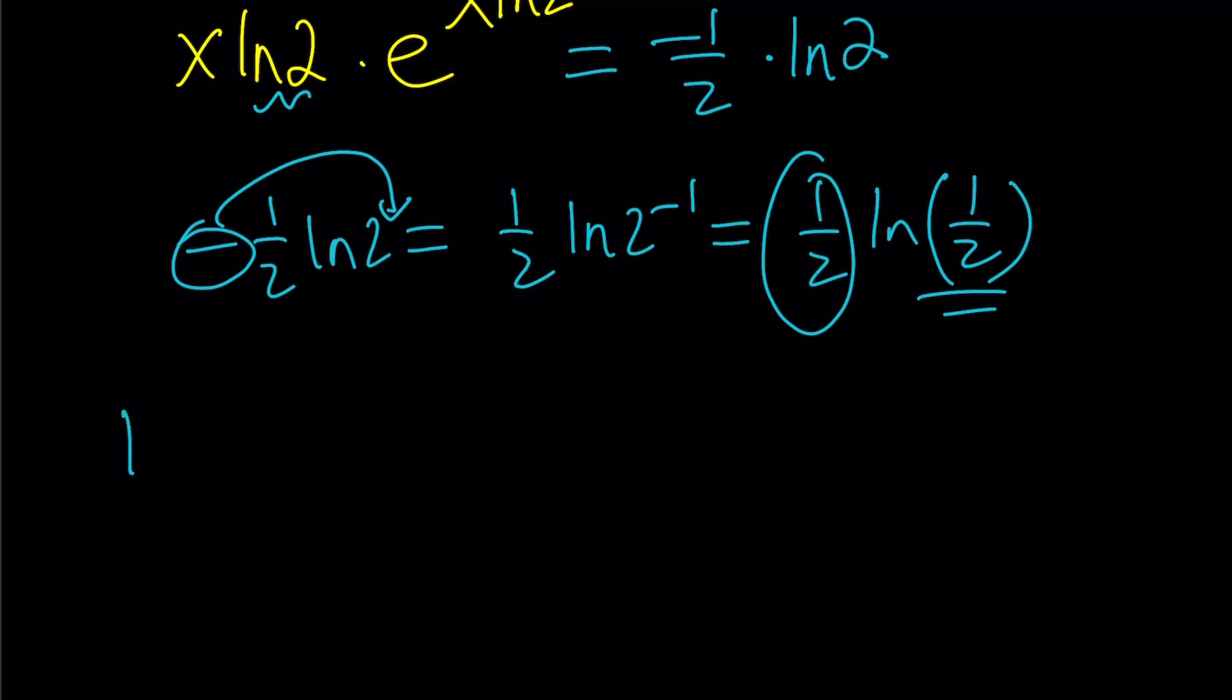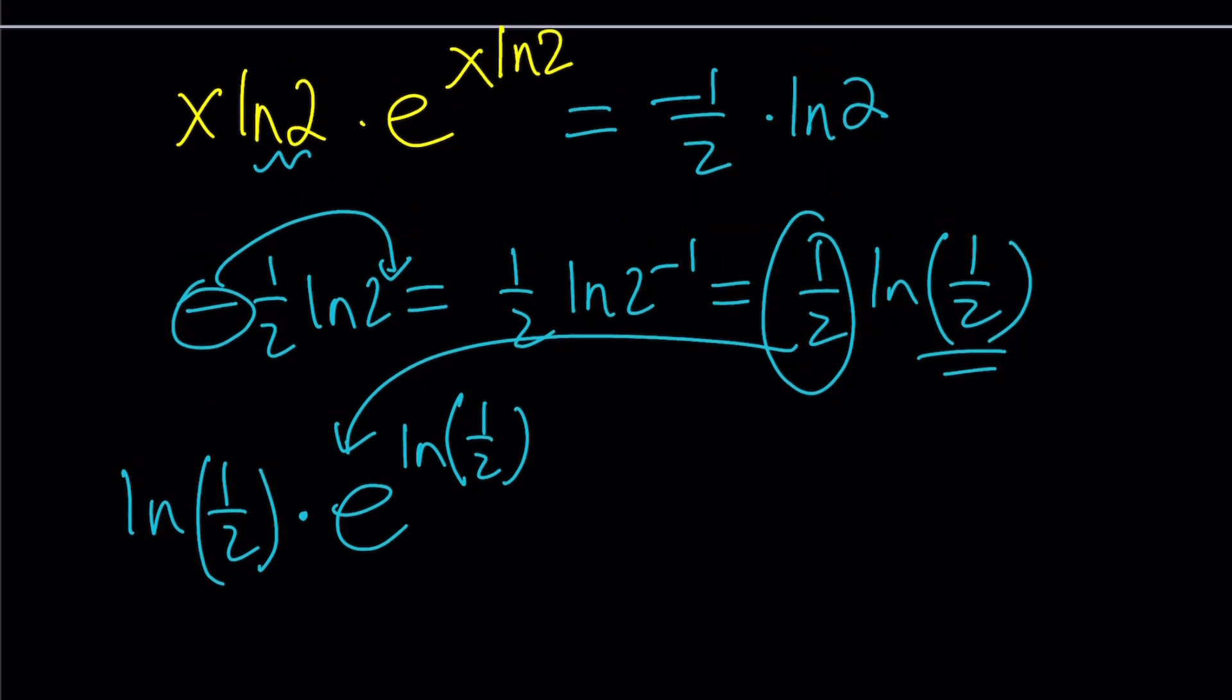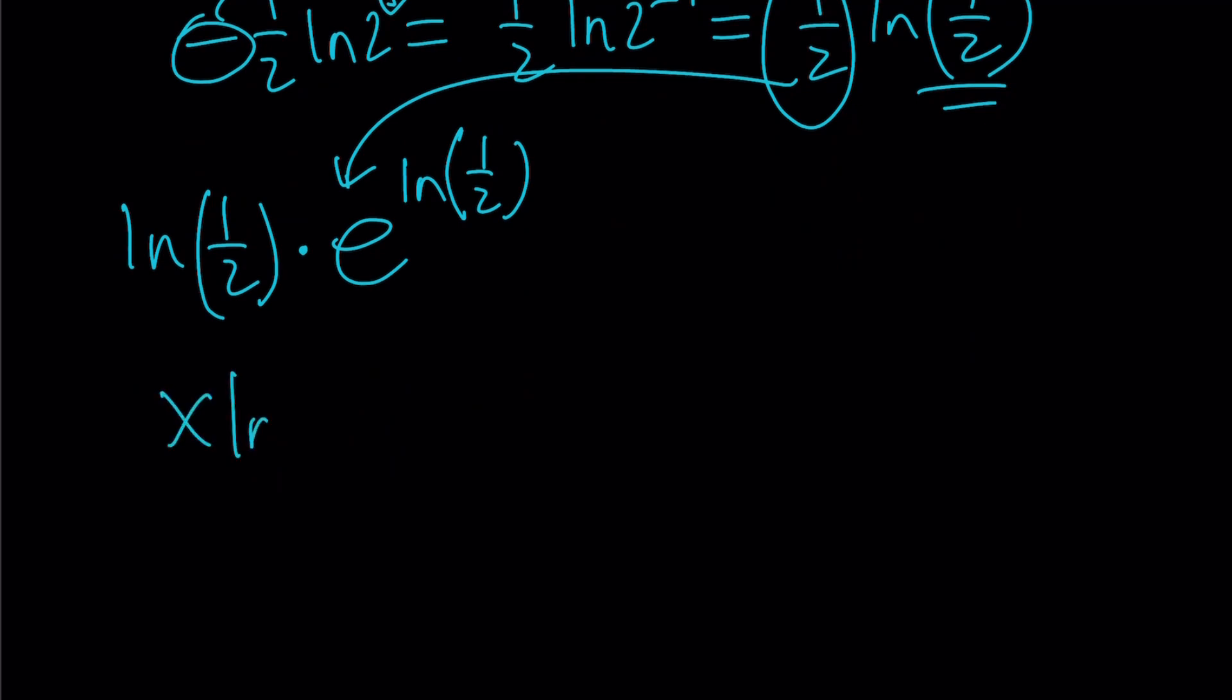I'm going to write this first. ln 1 half times, and 1 half will be replaced with e to the power ln 1 half, and notice that our t to the t appears again. So this is basically the right-hand side. x ln 2 times e to the power x ln 2 equals ln 1 half times e to the power ln 1 half. This is when we W both sides.